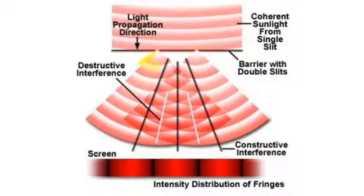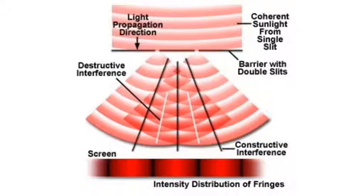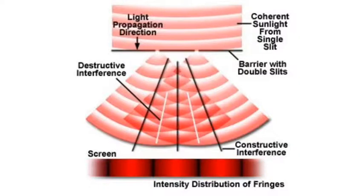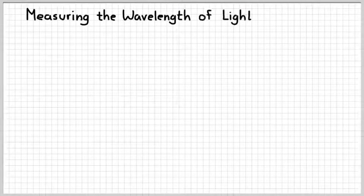Here's a better illustration: here are our two slits, and the waves diffracted as they go through the openings. There will be regions of constructive interference and regions of destructive interference. On the screen, we see bright spots and dark spots alternating in a repeating fashion.